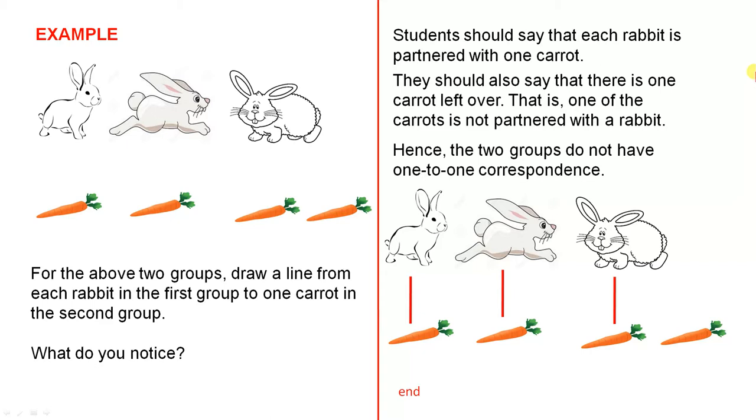They should also say that there is one carrot left over. That is, one of the carrots is not partnered with a rabbit. Hence, the two groups do not have one-to-one correspondence.